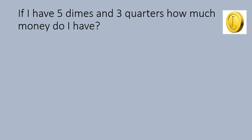So if I have 5 dimes and 3 quarters, how much money do I have? That's the first basic type of question. First, I have to figure out how much money 5 dimes are worth. Remember, a dime is 10 cents each, so to find the amount of 5 dimes you do 5 times 10 cents — that gives you a total of 50 cents.